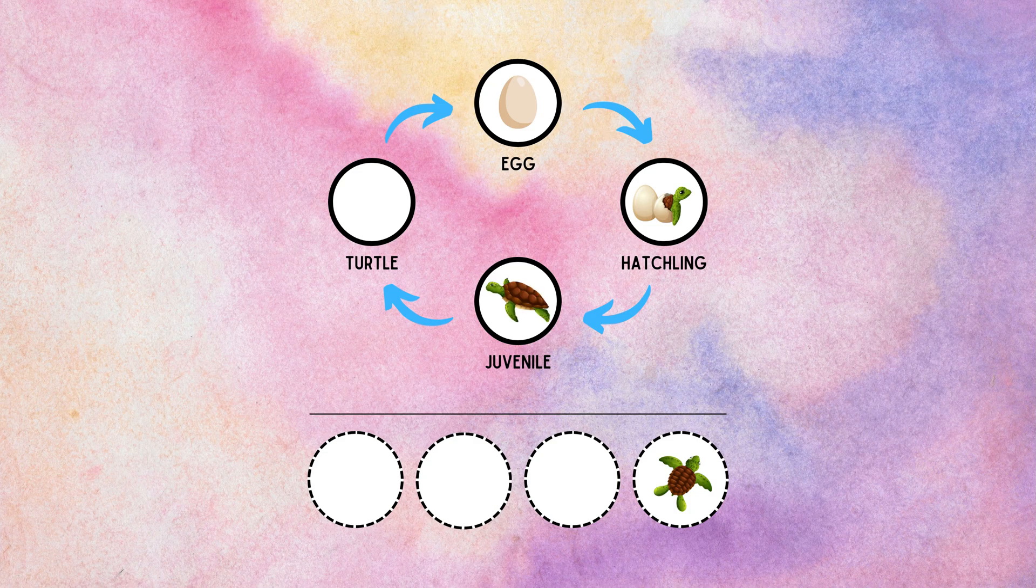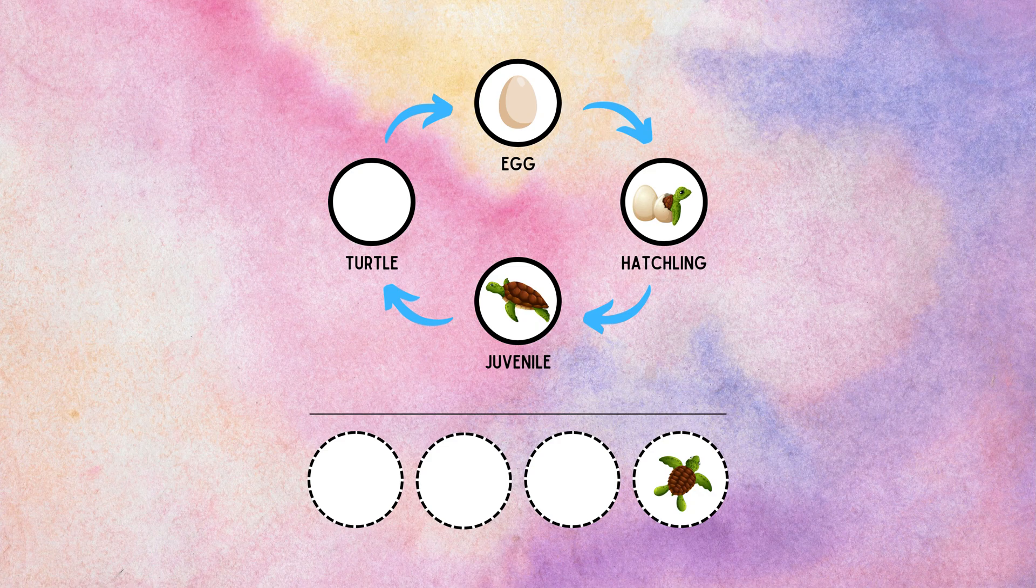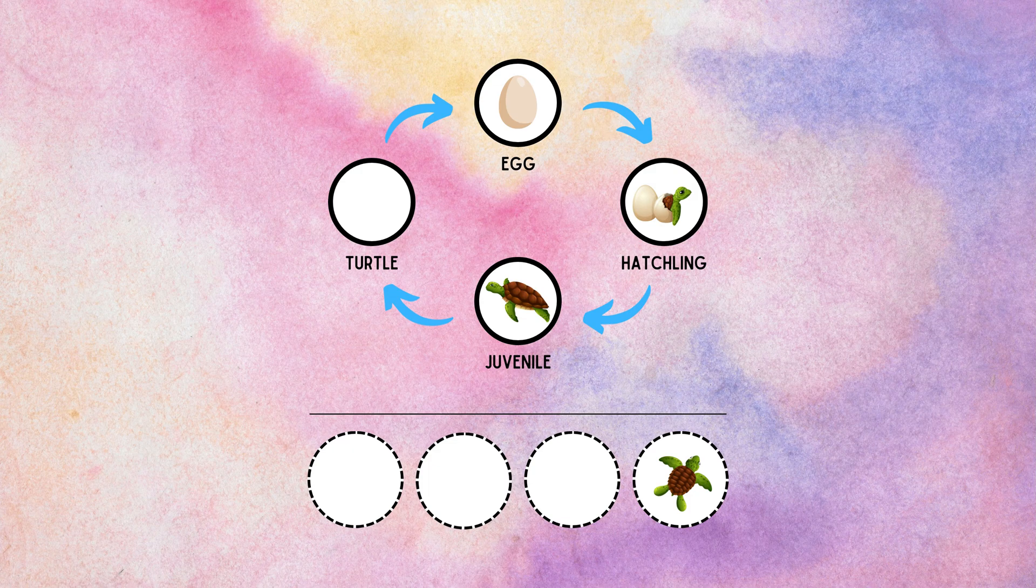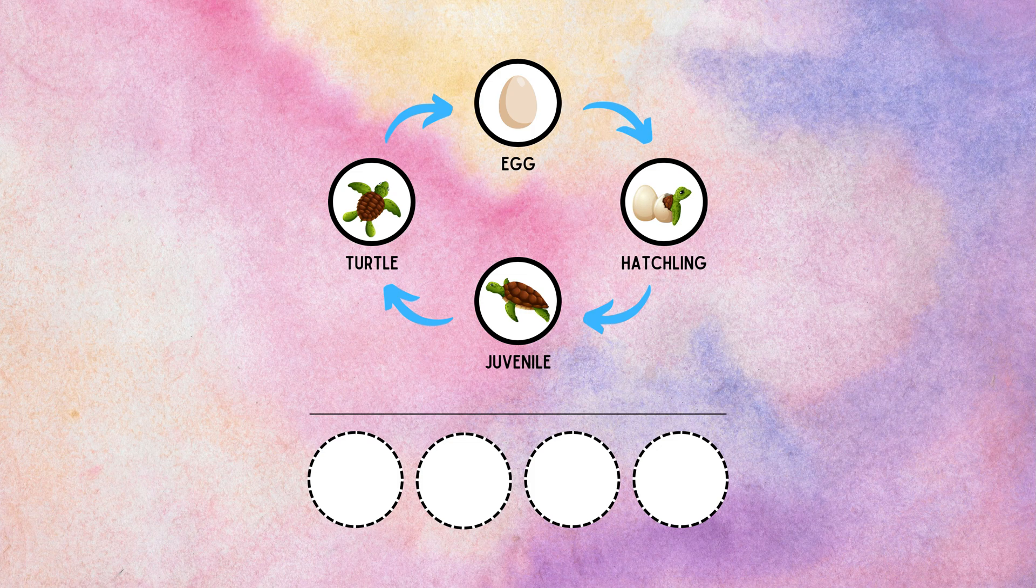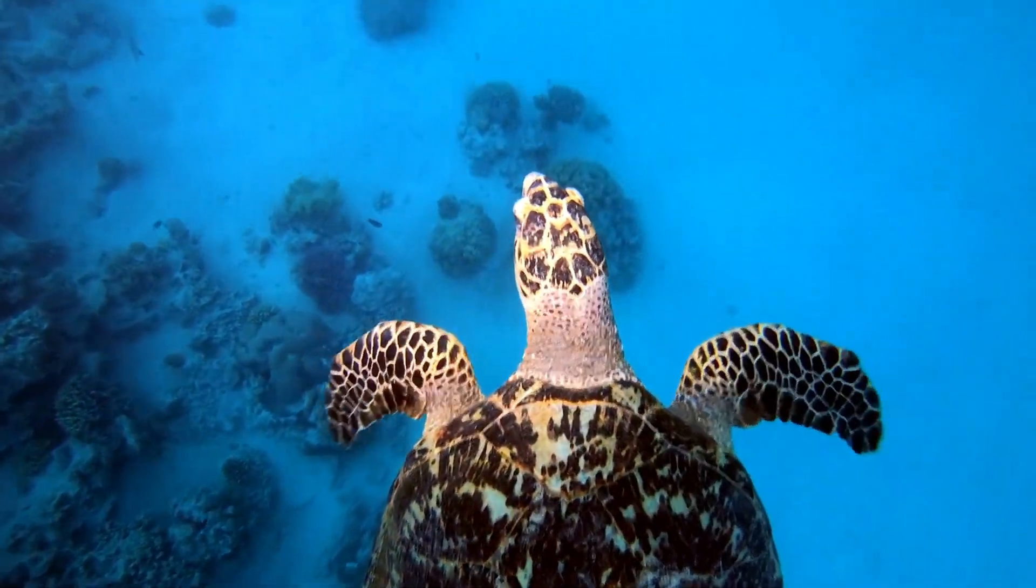After successfully reaching the water, the hatchlings enter the juvenile stage of their life cycle. In this phase, they are highly vulnerable and face numerous risks from predators, environmental factors, and food scarcity. When the turtles reach maturity, they enter the adult stage of their life cycle. The timing of reaching maturity can vary widely among species and depends on factors like size, diet, and environmental conditions.